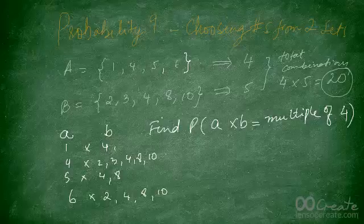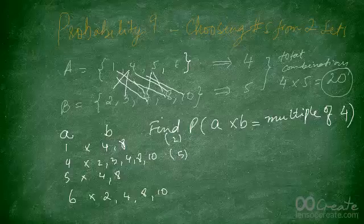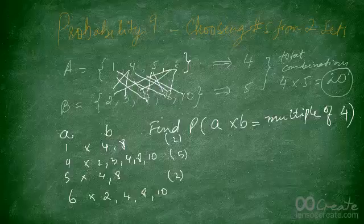The combinations whose products are multiples of 4 are: 1 times 4 and 1 times 8 — two combinations. Four times anything works since 4 is itself a multiple of 4: 4 times 2, 3, 4, 8, and 10 — five combinations. With 5: 5 times 4 and 5 times 8 — two combinations. With 6: 6 times 2, 6 times 4, and 6 times 8 all work — giving four combinations.